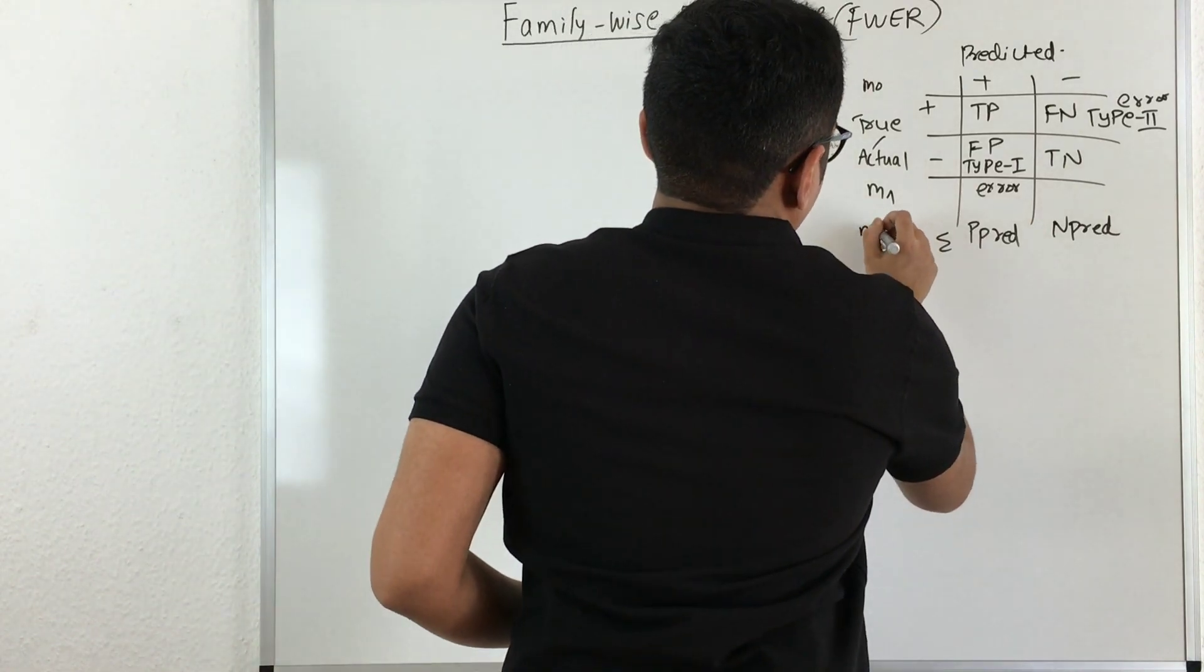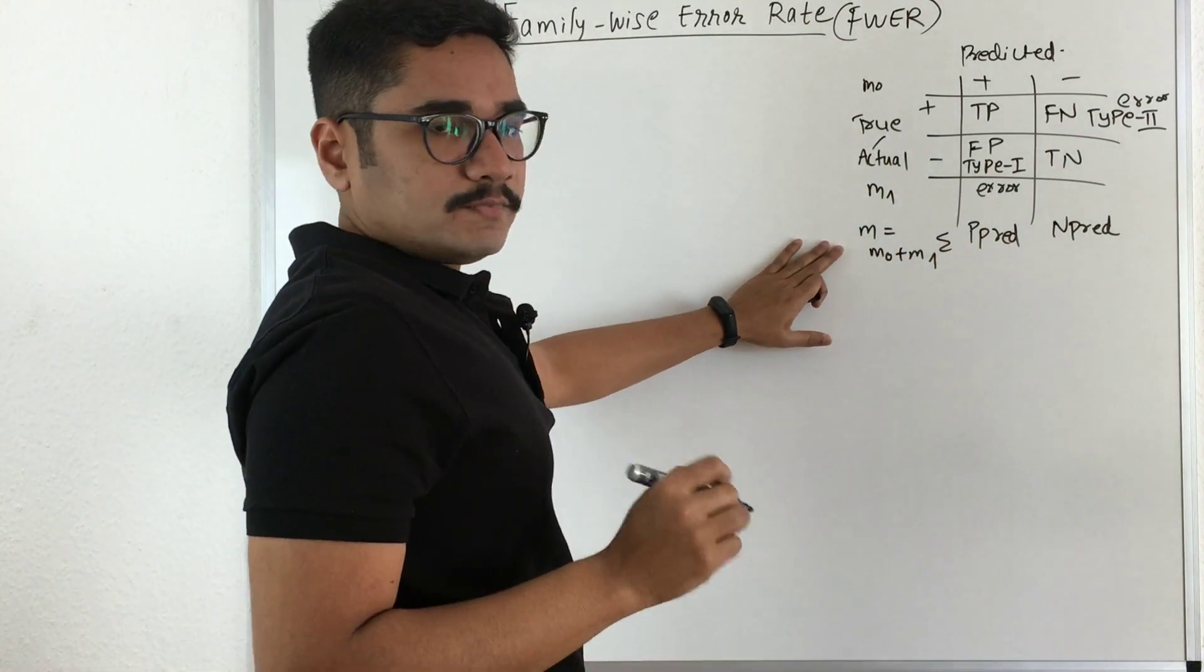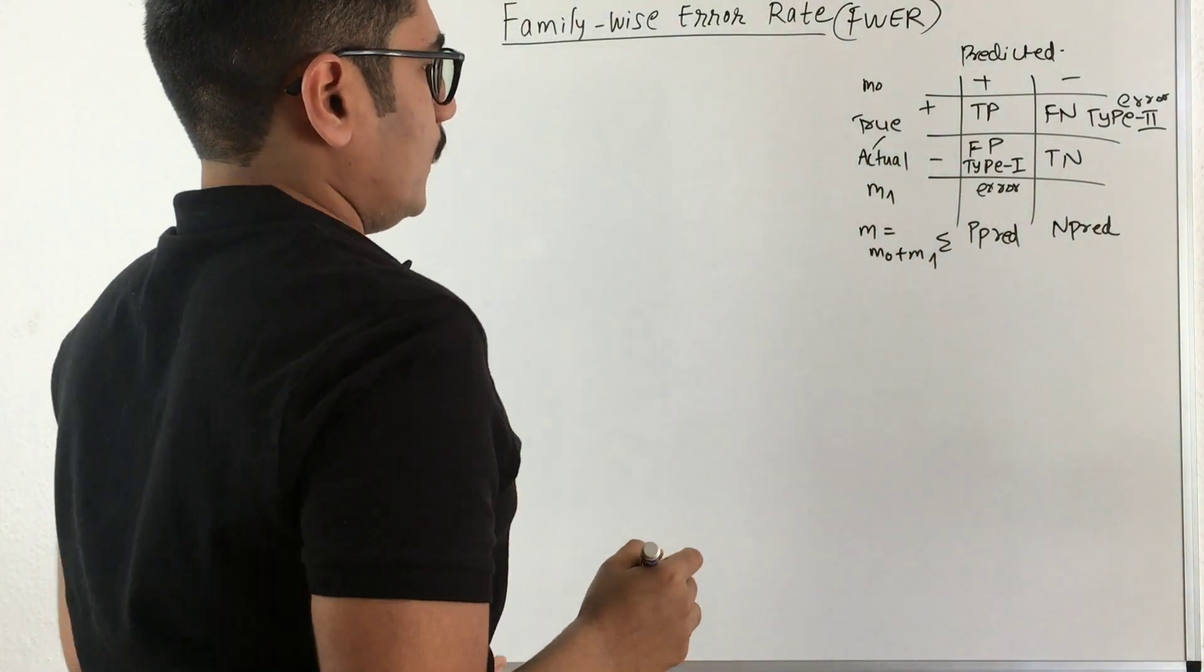So let's take M equals M0 plus M1. So M is a total number of samples or the number of samples or the results that we have.